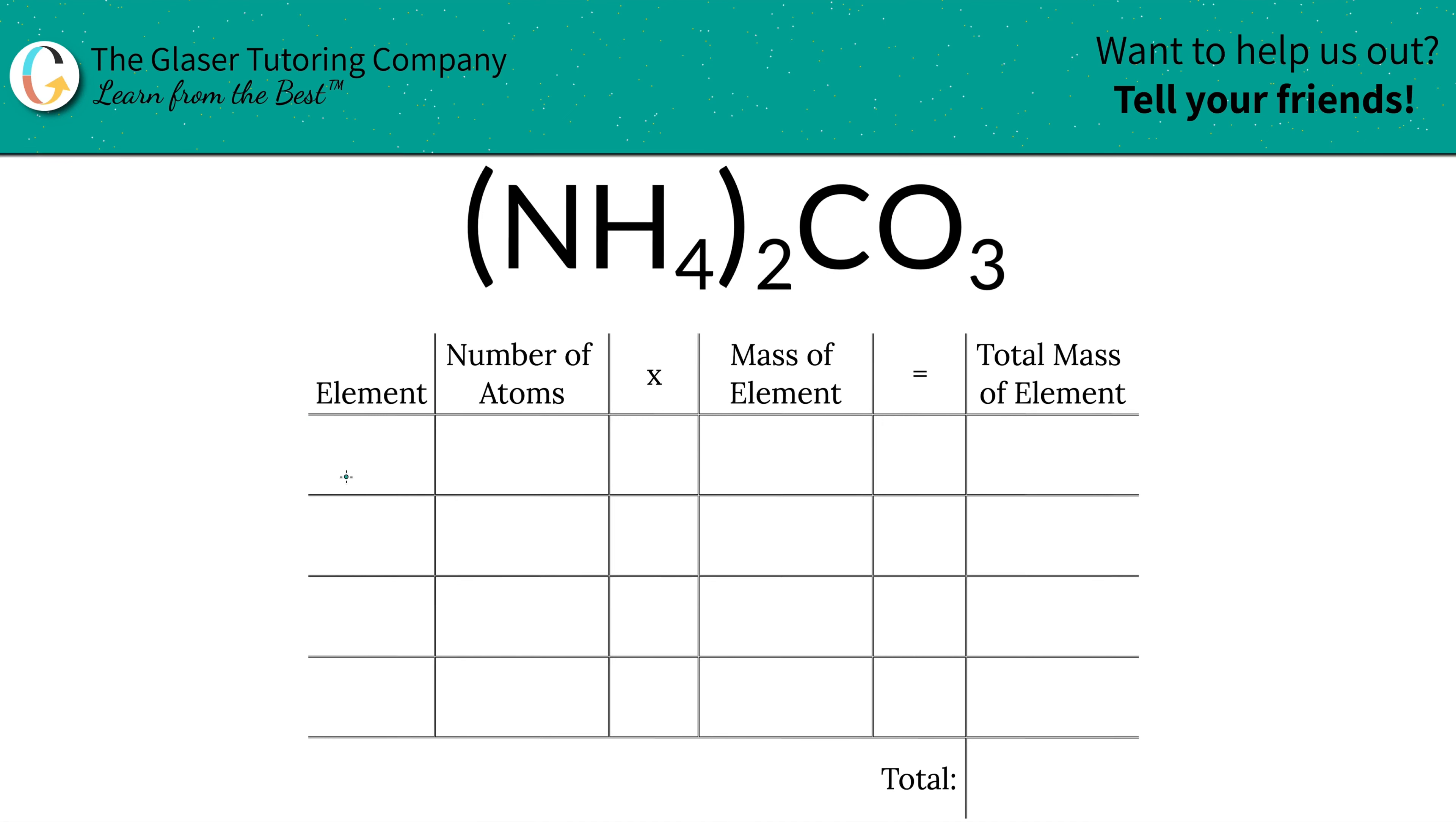So the first thing is we're going to write the elements down that we see. We've got nitrogen, we've got hydrogen, we've got carbon, and oxygen.